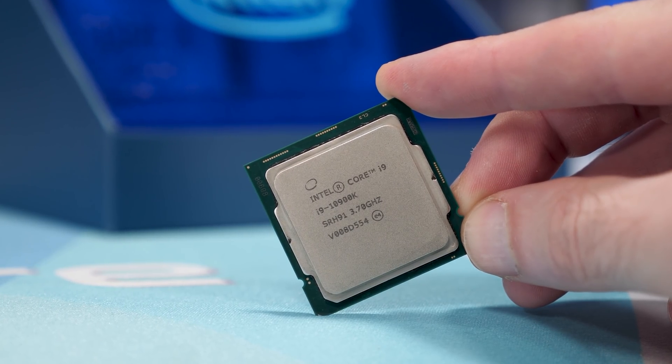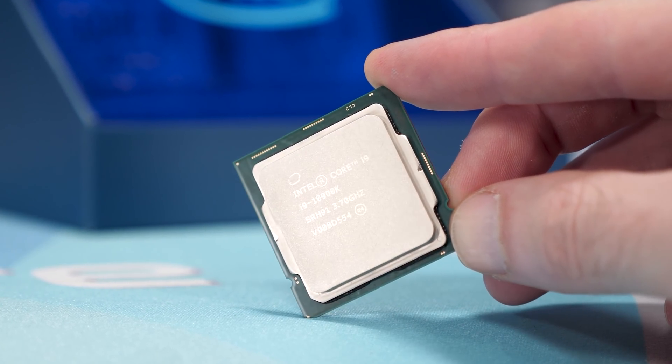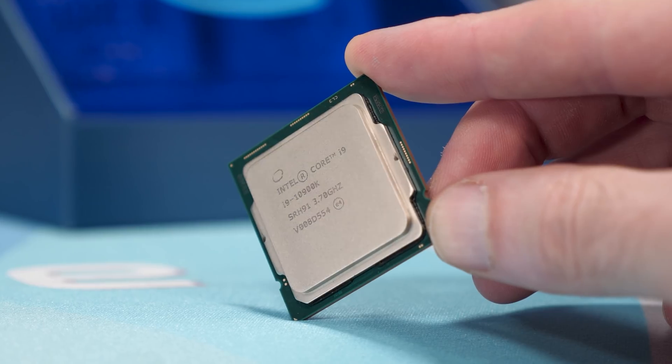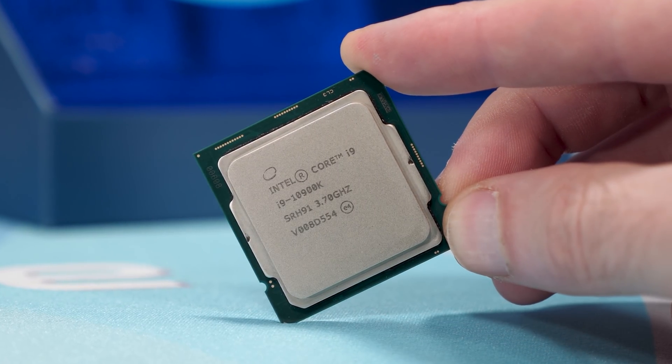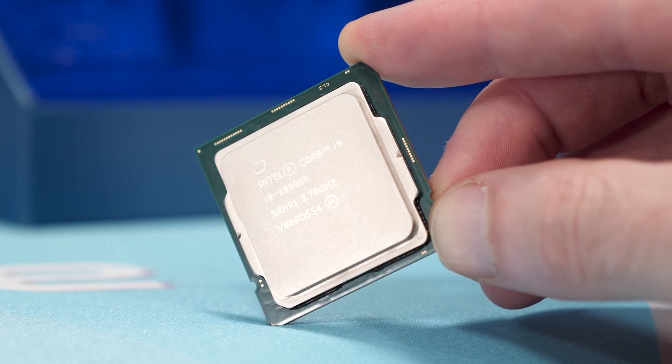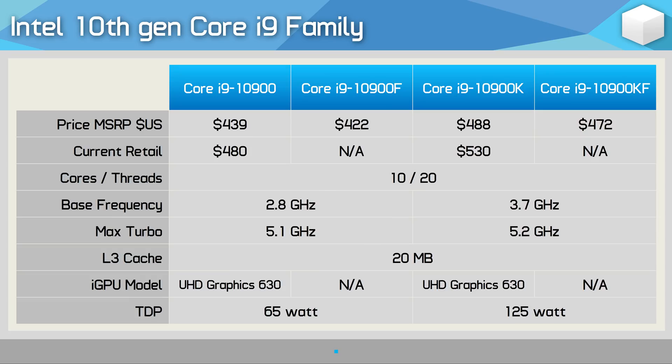Finally, we have the mighty Core i9 range, offering 10 cores with 20 threads and a 20MB L3 cache. There are four models in total, two of which are F variants. The 10900 is the base 65W part, featuring a rather low 2.8GHz base frequency with a 5.1GHz turbo. Then there's the unlocked 10900K, and thanks to a higher 125W TDP rating, it clocks no lower than 3.7GHz with a max turbo boost of 5.2GHz.